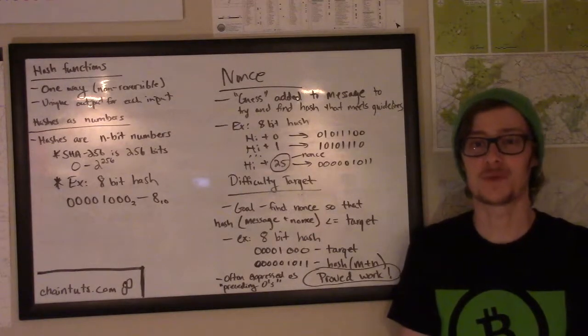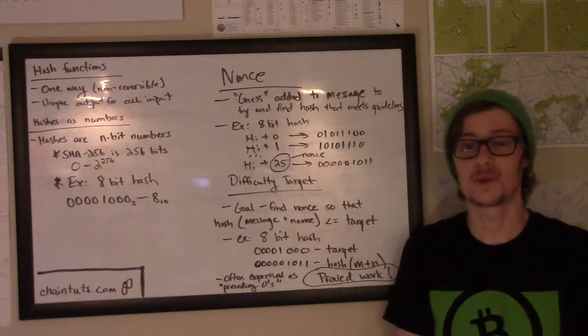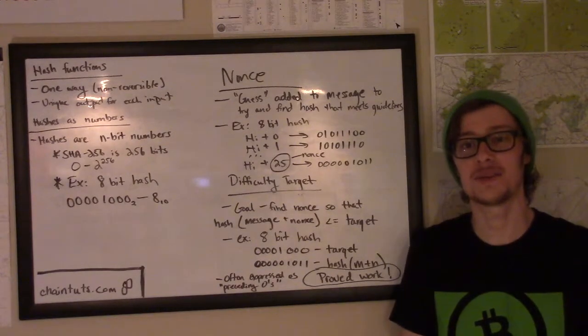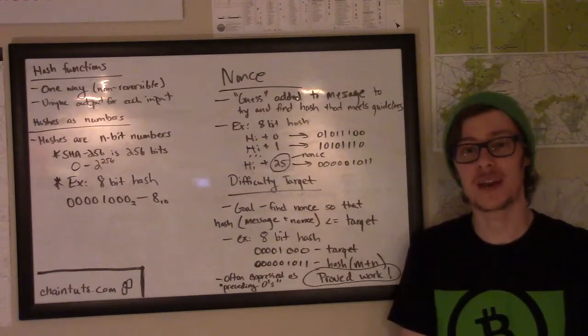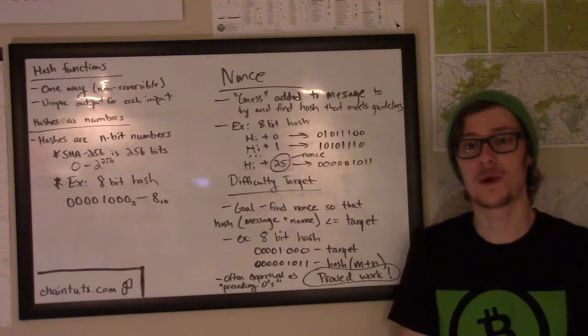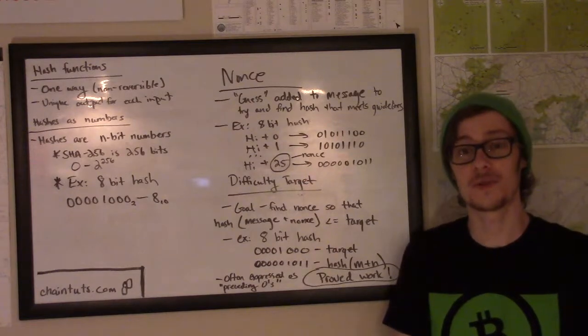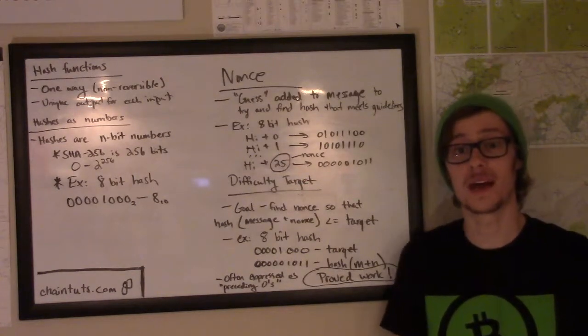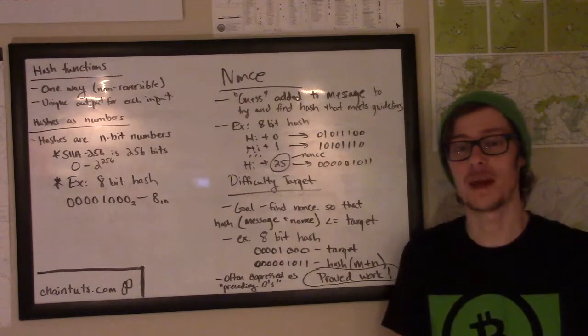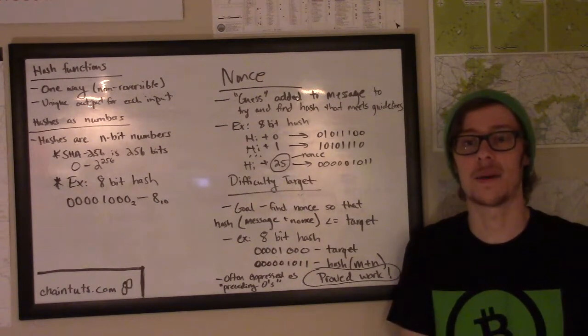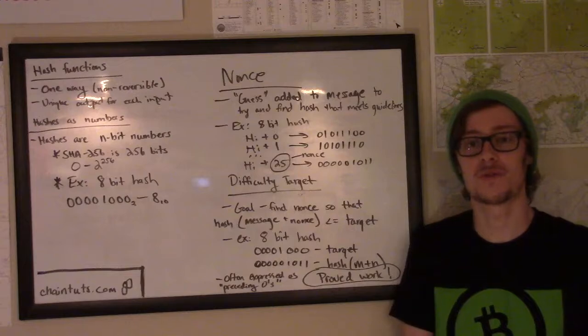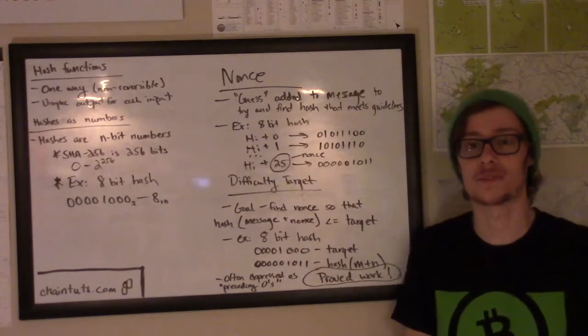Hey everyone, this is Josh with another Bitcoin and blockchain tutorial available at ChainTuts.com. Today we're going to be doing a more technical overview of the proof-of-work algorithms used to secure cryptocurrencies like Bitcoin, Litecoin, Bitcoin Cash, and many others. If you're looking for a more high-level overview of this concept, we have another video tutorial available as well as an article on the website.